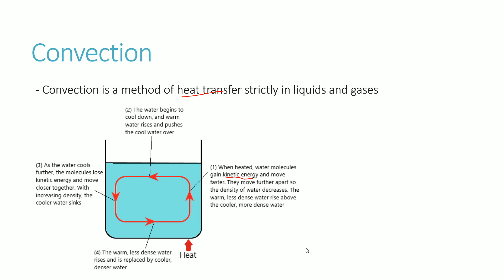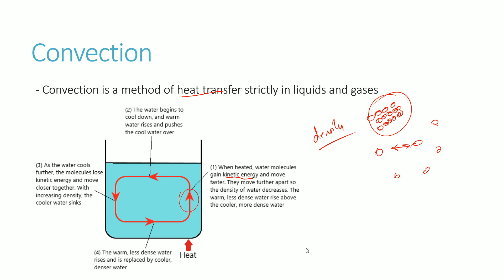Density is really just how packed something is — something is more dense when there are a lot of molecules in close proximity, and less dense when molecules are more spread apart. As you heat water, the molecules become more separated, so heated liquid molecules are less dense than cool water. This creates a density difference between heated and unheated water, causing the heated liquid to rise to the top while cooler liquid falls to the bottom.